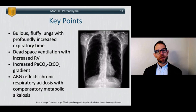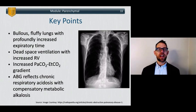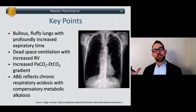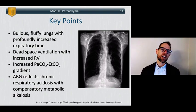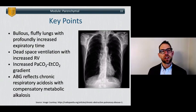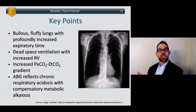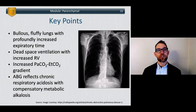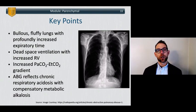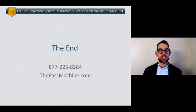To summarize this portion of the lecture: COPD on X-ray shows bullous, very fluffy lungs. There is a profoundly increased expiratory time because these lungs have lost their elasticity. Dead space ventilation is increased, consistent with their elevated residual volume, which is consistent with an increased total lung capacity. There is an increased PaCO2 to end-tidal CO2 gradient. These patients have a chronic respiratory acidosis with compensatory metabolic alkalosis. And that is it for this lecture — thank you very much.